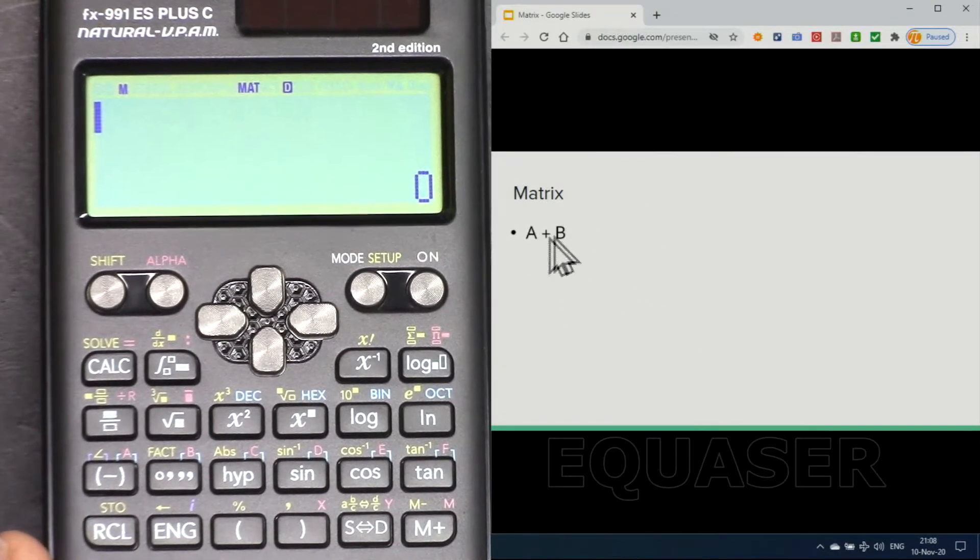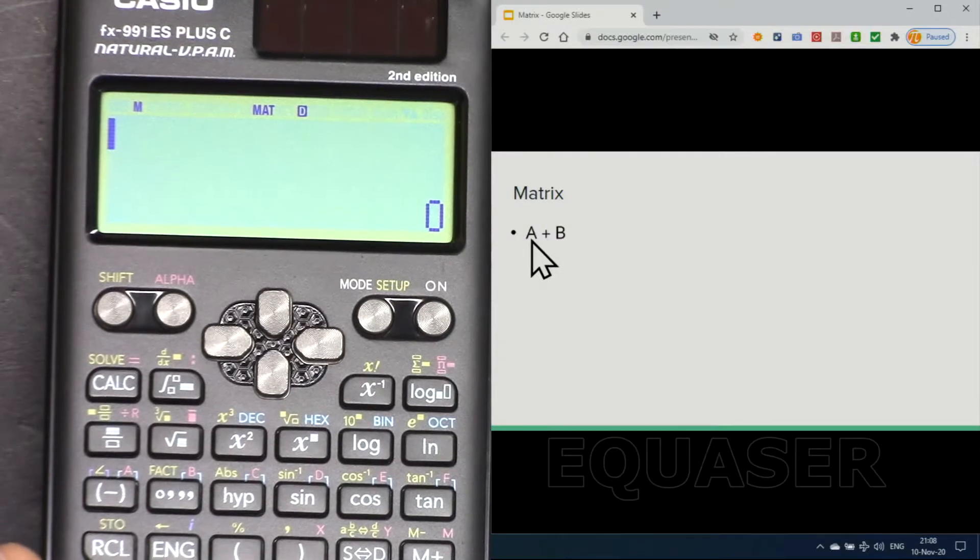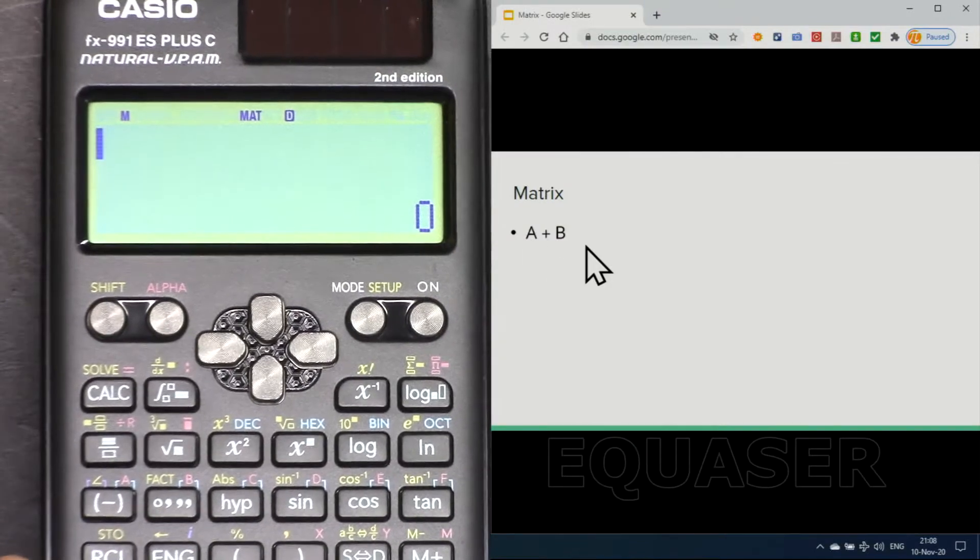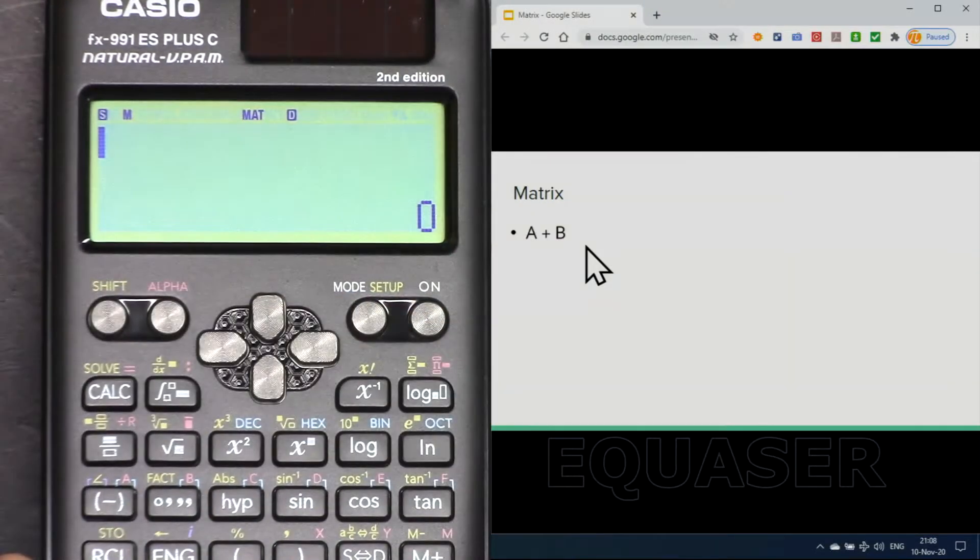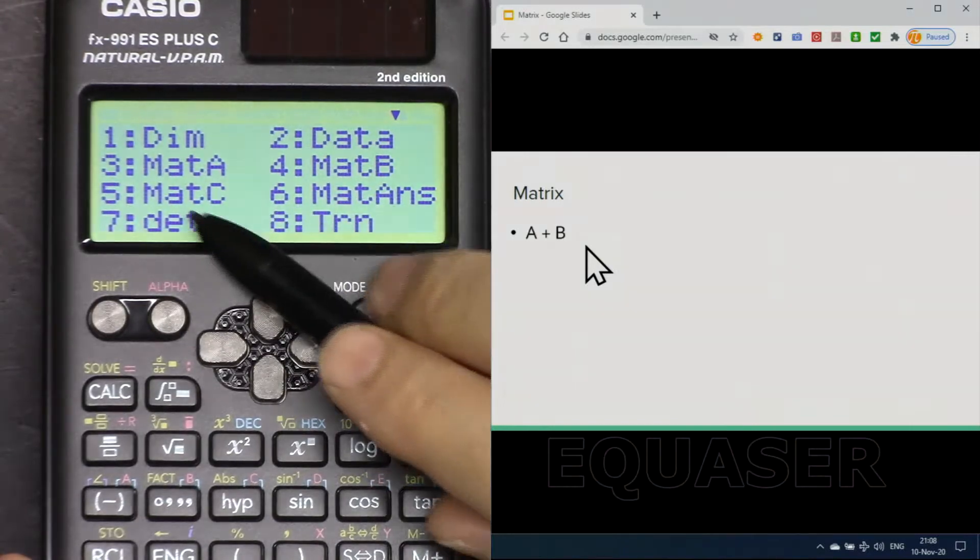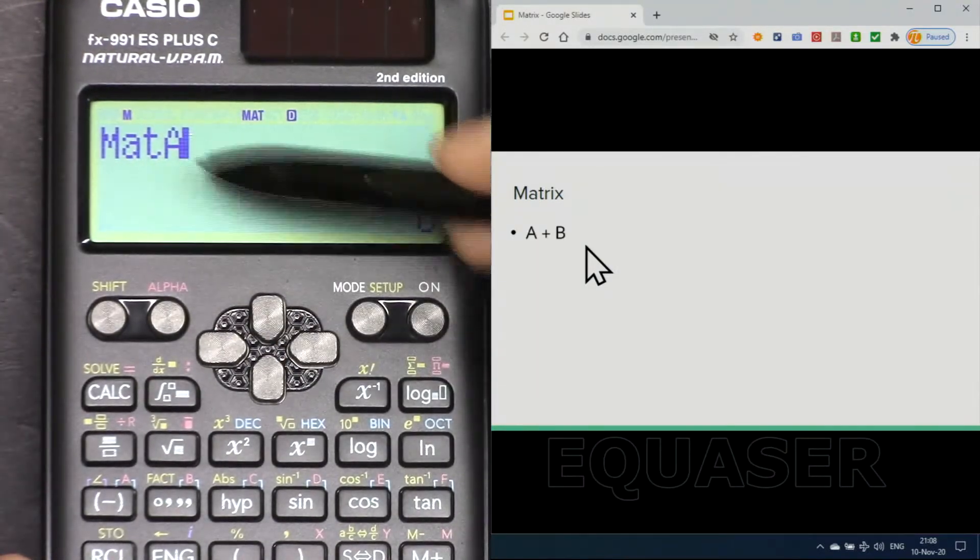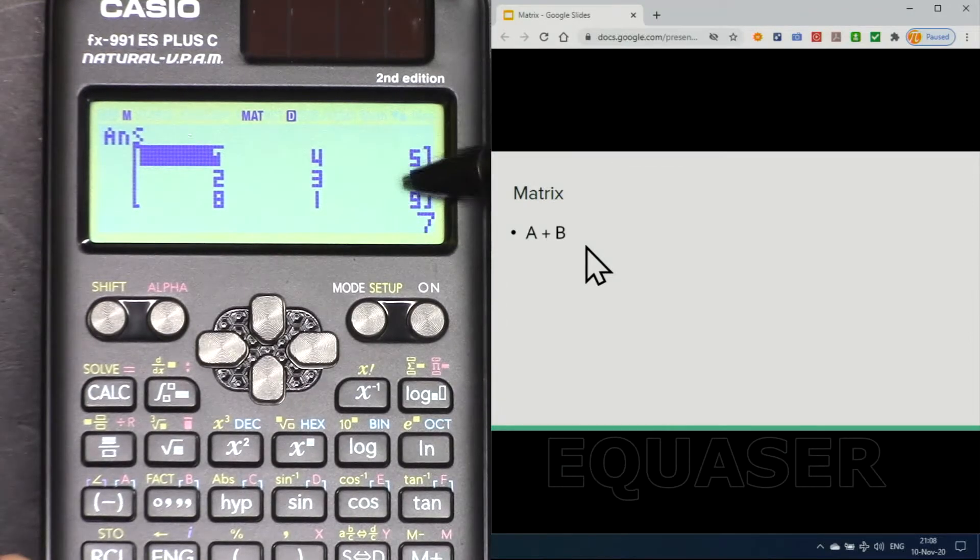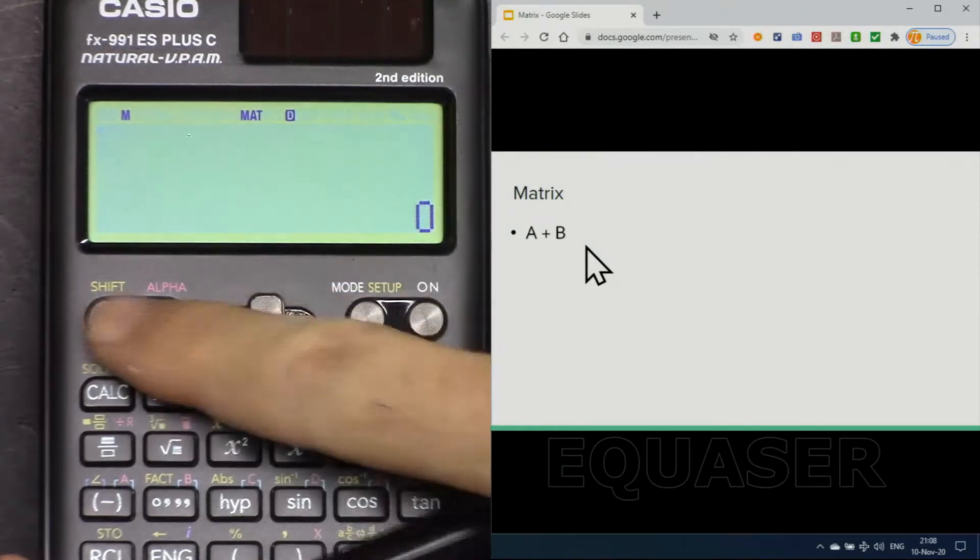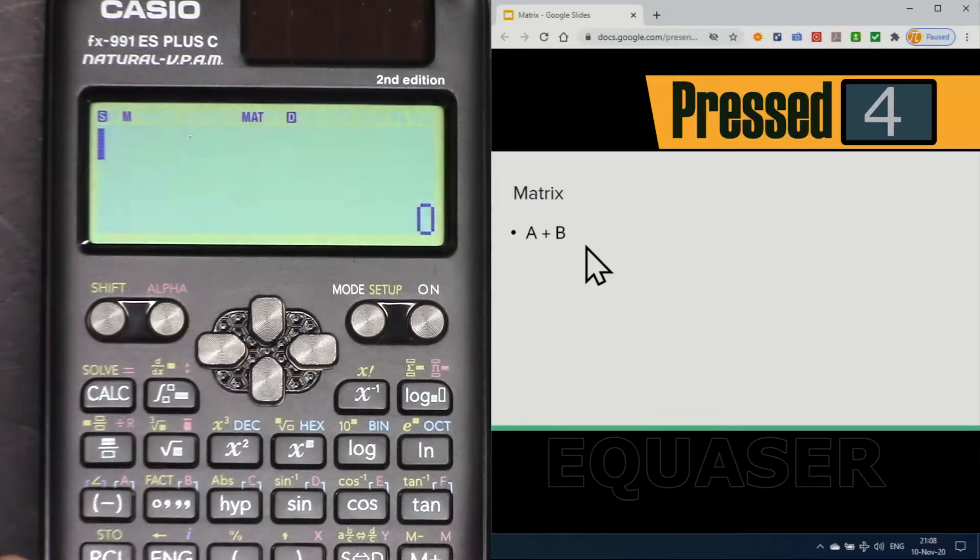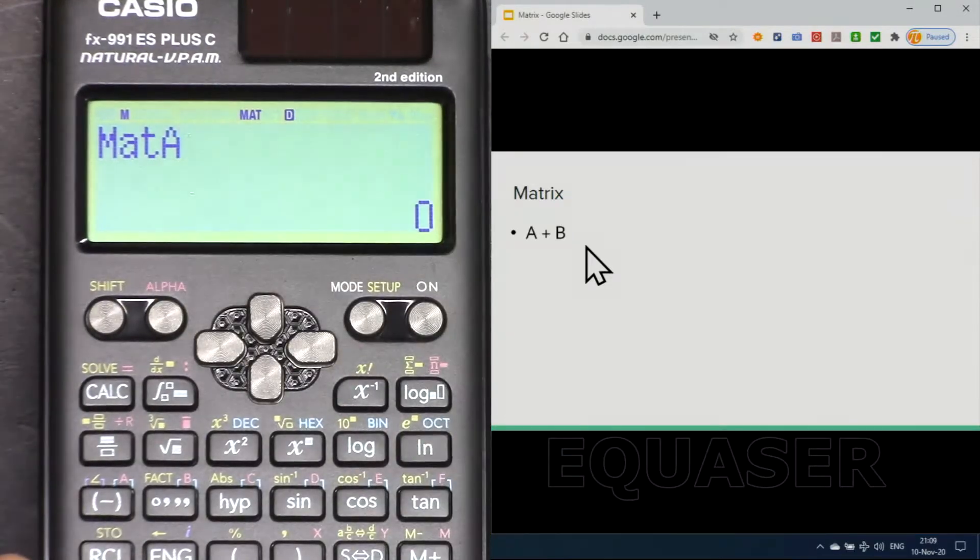Now let's say you want to do A plus B, matrix A plus matrix B. So we do shift and then 4 which is matrix, matrix A 3, and that's our matrix. If I press now equal sign the matrix will be displayed, but I'm not going to do it. I'm going to do some calculation. Shift matrix 3.